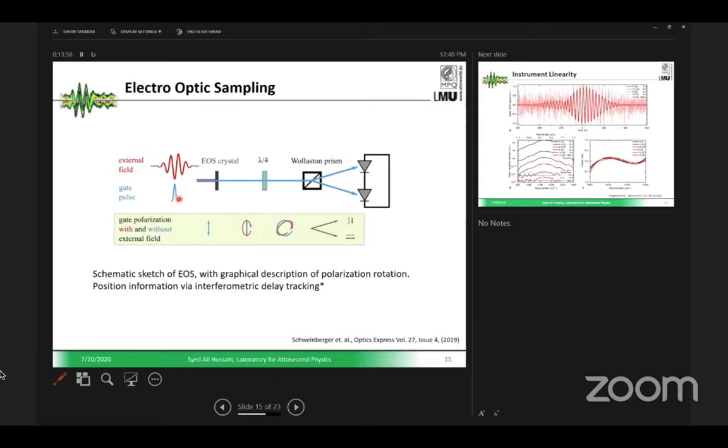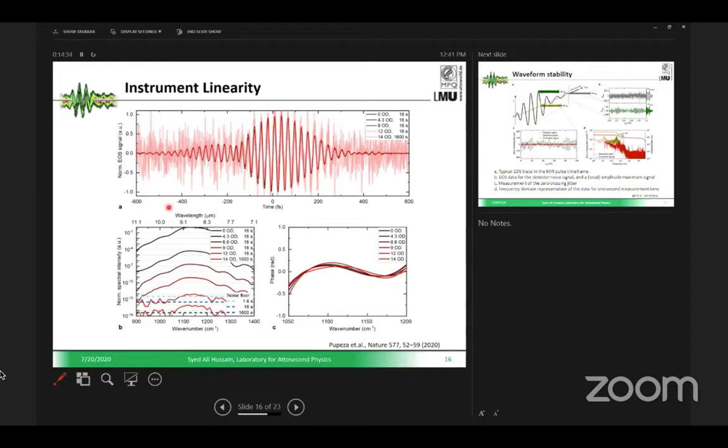How does electro-optic sampling work, or how does it measure the electric field? You just delay the gate pulse with respect to your mid-infrared pulse—the red beam. Depending upon the strength of the red beam, the polarization of this beam gets modified. If you delay at different points, you just measure this change in the polarization state. By subtracting these two signals, you get the electric field of light.